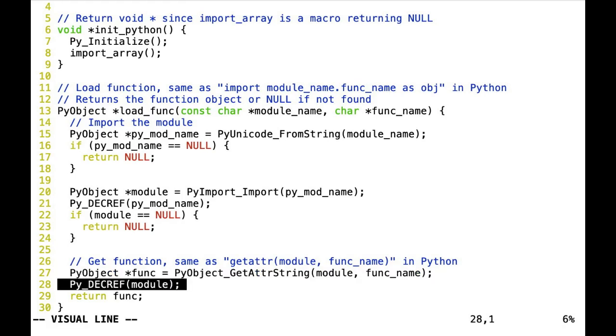And then we do Py_DecRef. DecRef means decrements the reference counter. Python memory management is reference counting, meaning every time you get or create an object, it has a reference counter that is increased by one. And when you're done with it, you should decrease the reference counter. Using two systems that each one has its own way of managing memory, this is the most difficult part when dealing with these kinds of things. And then we return the function.